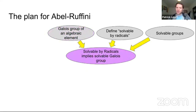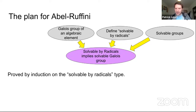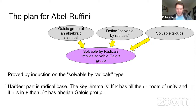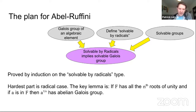We put these together — the core of the proof is to show that if an element is solvable by radicals, then it has a solvable Galois group. The idea is to do induction on the solvable-by-radicals type. The hard part, where the real mathematical content is, is the case of a radical extension. The key lemma is: if the bottom field has all the roots of unity, and A is some element of the bottom field, then the nth root of A has abelian Galois group over F.